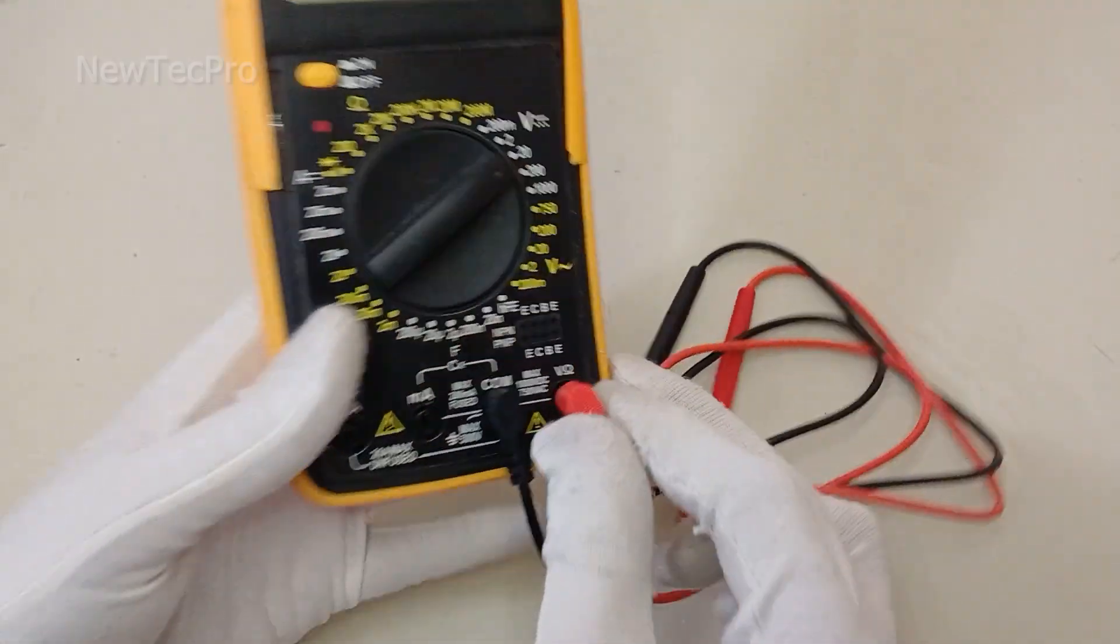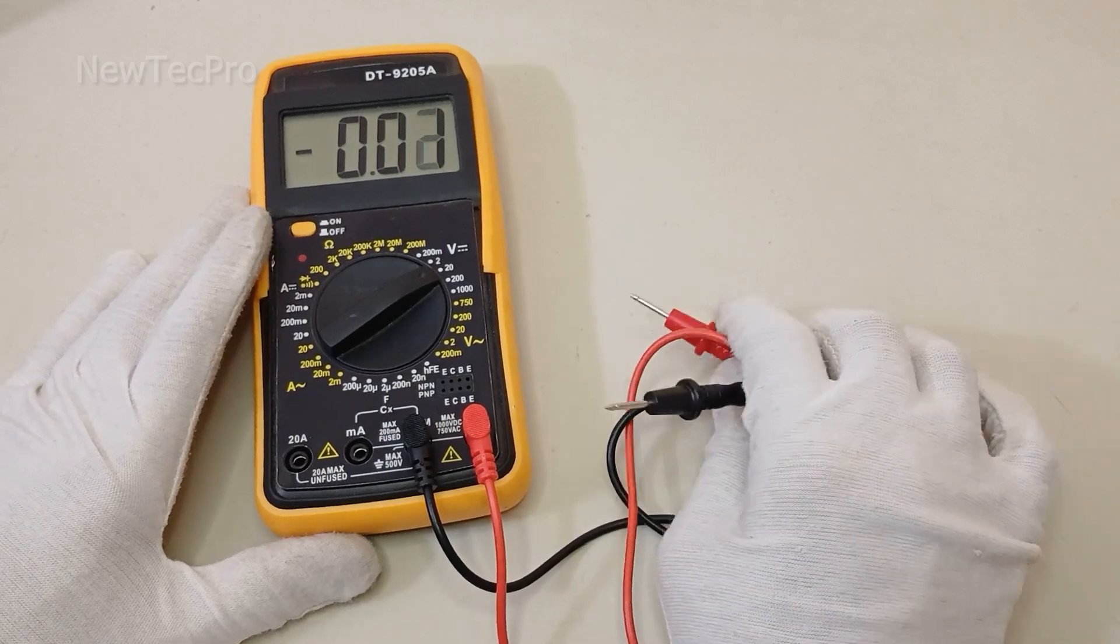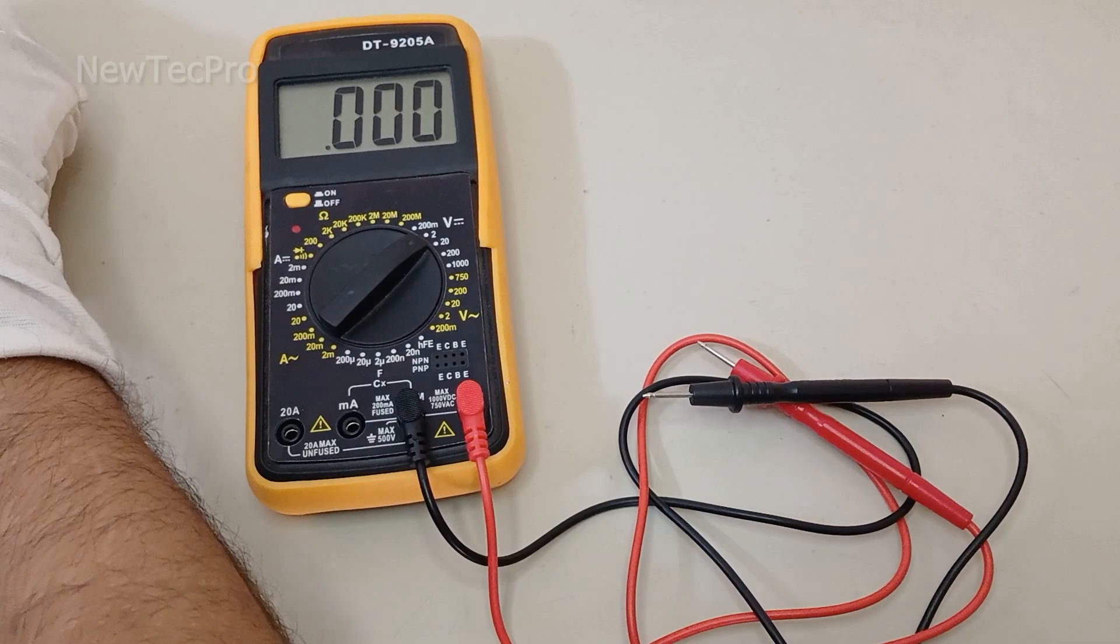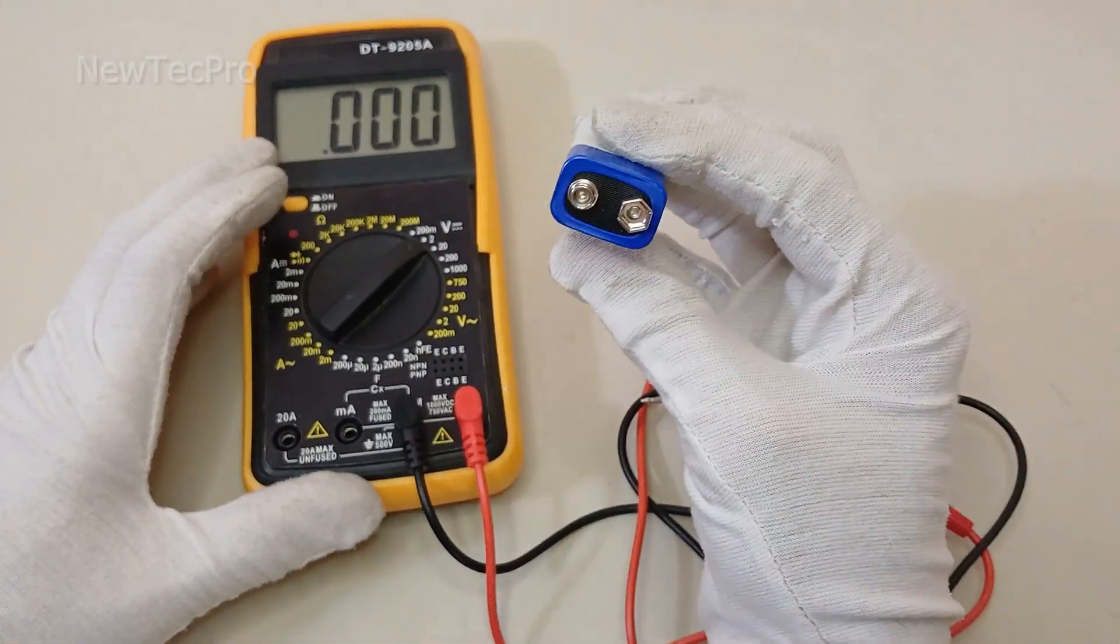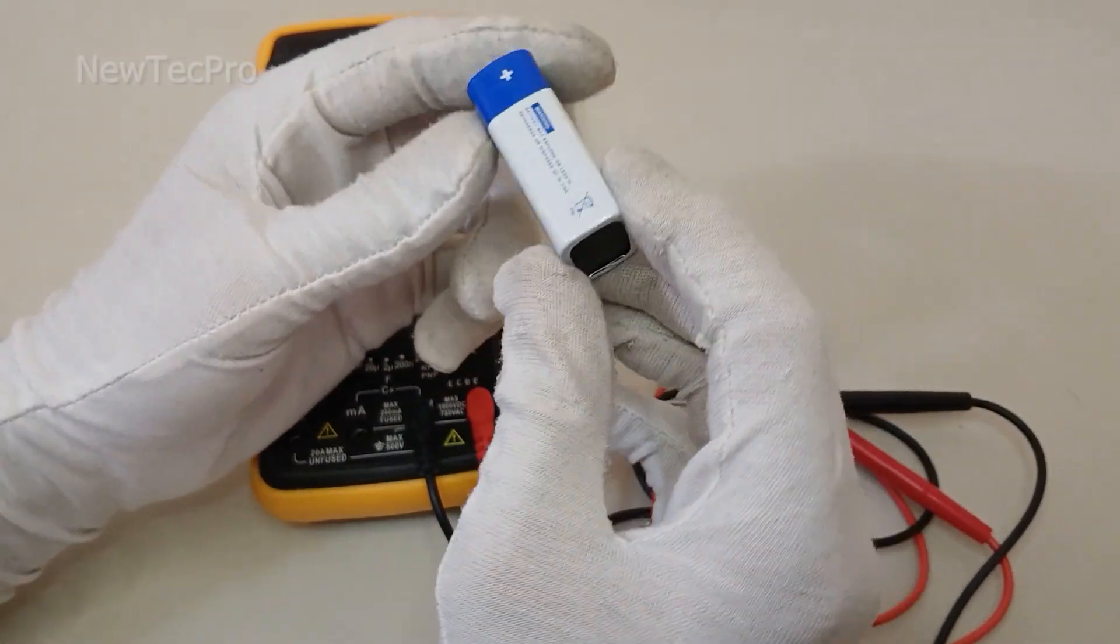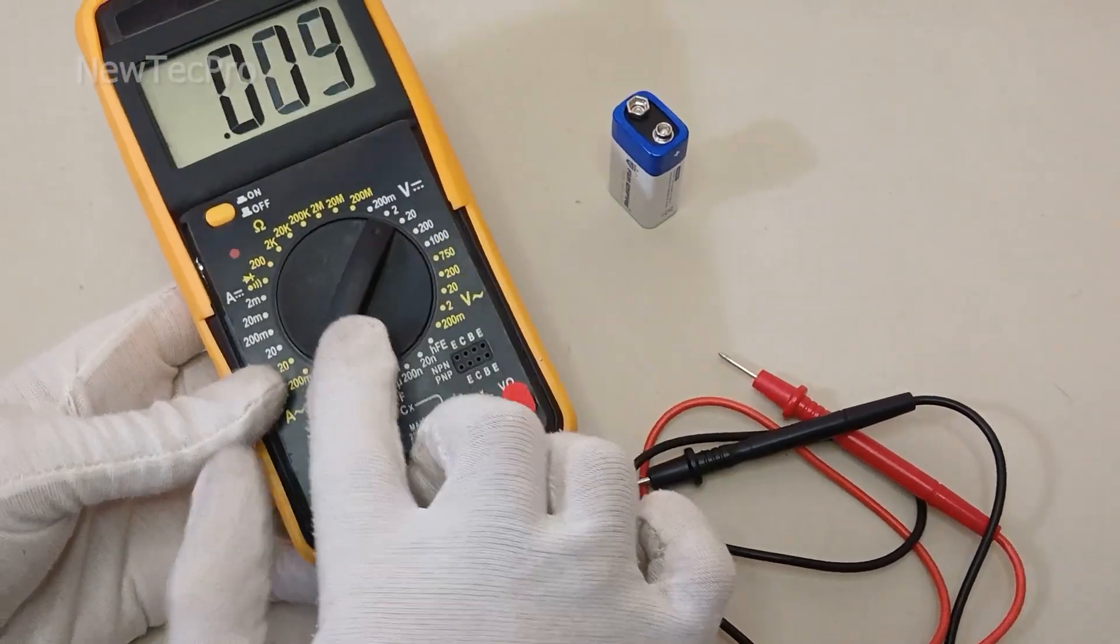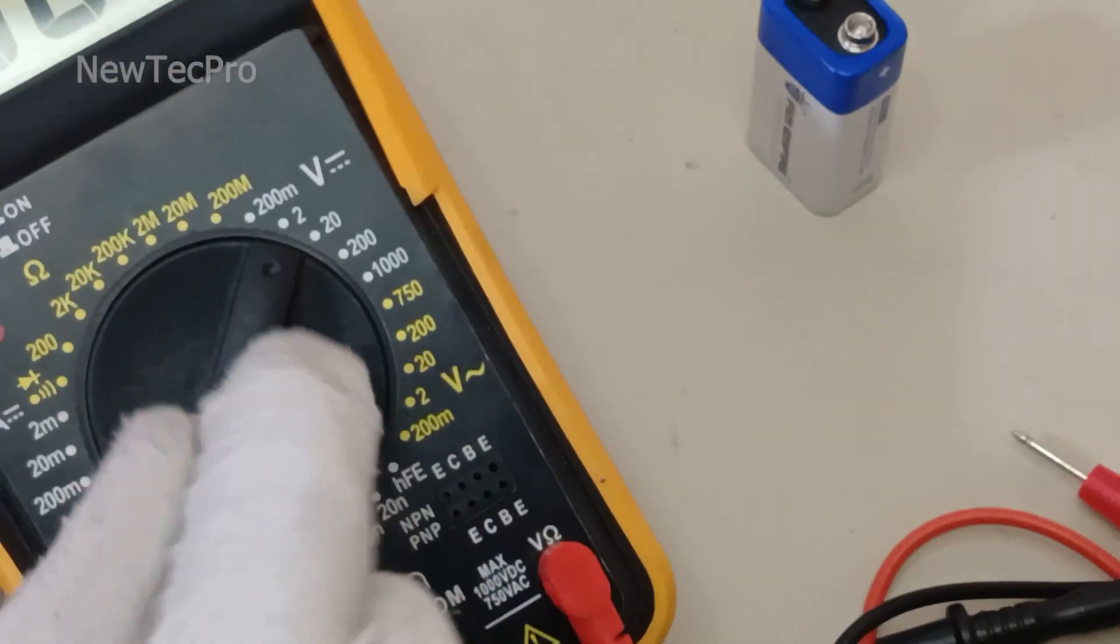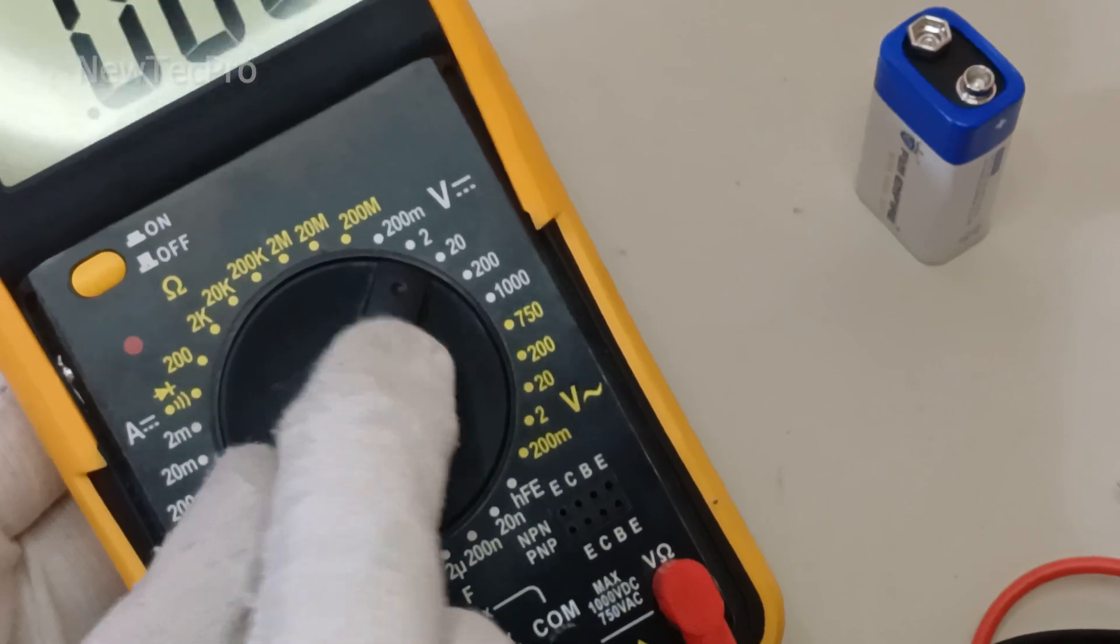Okay, step three: preparing to measure. Now take your DC power source. For this example, I'm using a standard 9V battery. Make sure your multimeter is set to an appropriate voltage range higher than the voltage you're measuring.